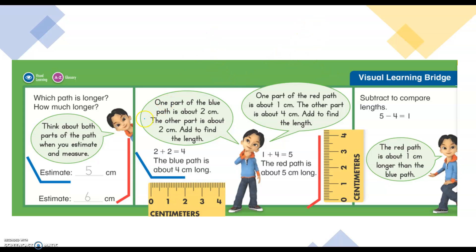We're looking at these two paths. Think about both parts of the path when you estimate and measure. We can estimate that it's five centimeters long, this blue one, and then we can estimate that the red one is six centimeters long.